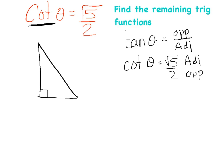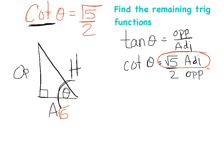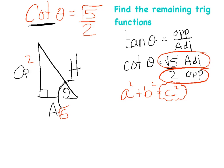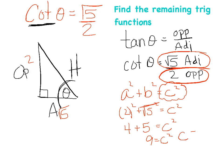Label theta, then identify hypotenuse, adjacent (√5), and opposite (2) on the triangle. Use the Pythagorean theorem: 2² + (√5)² = c², giving 4 + 5 = c², so c² = 9 and c = 3. The hypotenuse is 3.